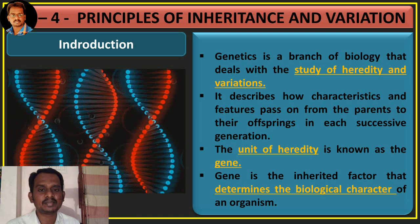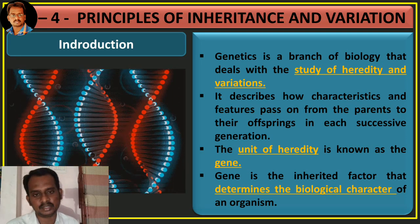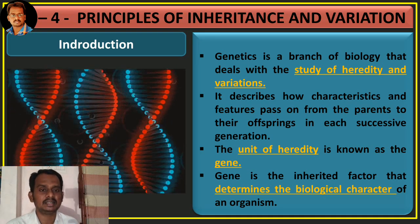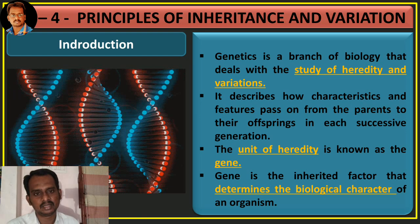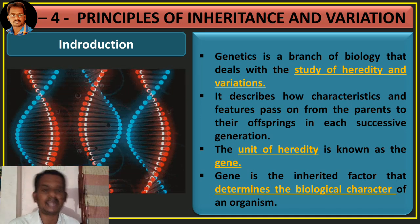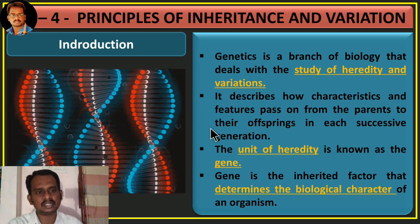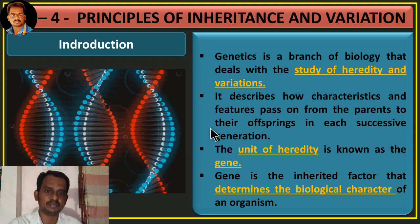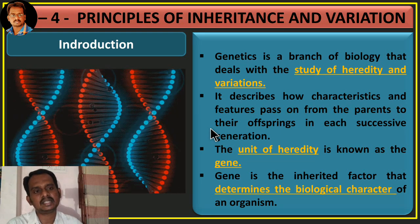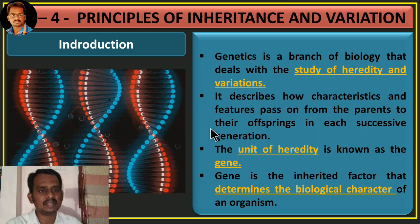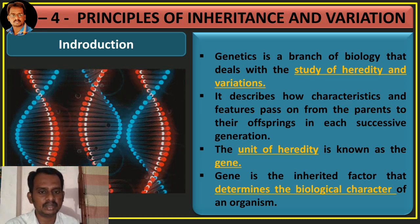What is the difference between gene and DNA? A gene is a fragment of DNA. It is the part responsible for the transfer of character from parents to offspring. A gene is an inherited factor that determines the biological character of an organism. It is considered as the unit of heredity.